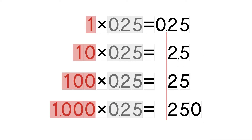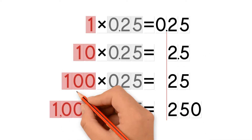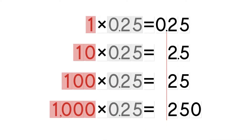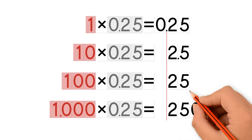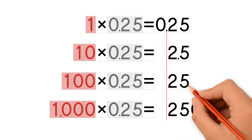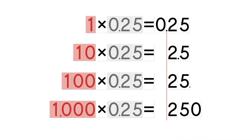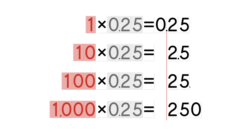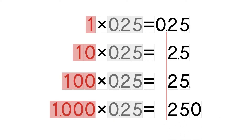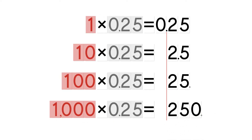If we multiply a number by 100, the decimal point moves two places to the right. If we multiply by 1000, the decimal point moves three places to the right. As you can see, you get a pattern.